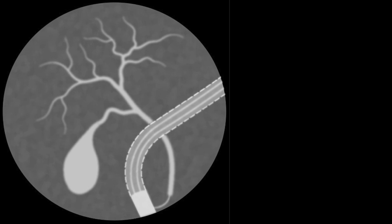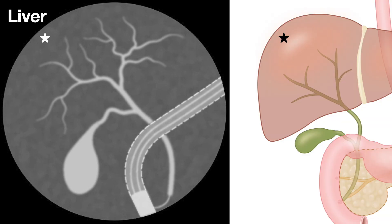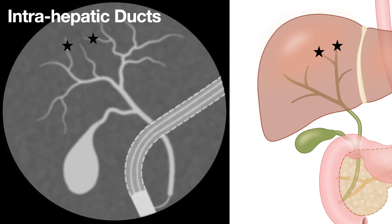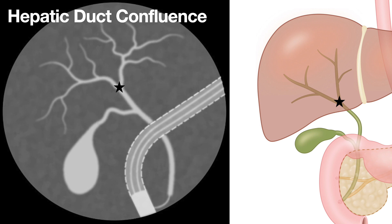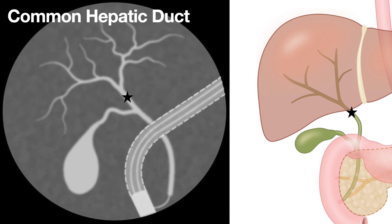Starting with the biliary system — that network that moves bile around. The journey starts in the liver, where bile is actually produced. From there it flows into tiny ducts within the liver, the intrahepatic ducts. They merge, getting bigger, eventually forming the main right and left hepatic ducts. Those two join together at a really important point called the confluence of the hepatic ducts — like a major highway junction. After that confluence, the single duct carrying bile away is called the common hepatic duct.